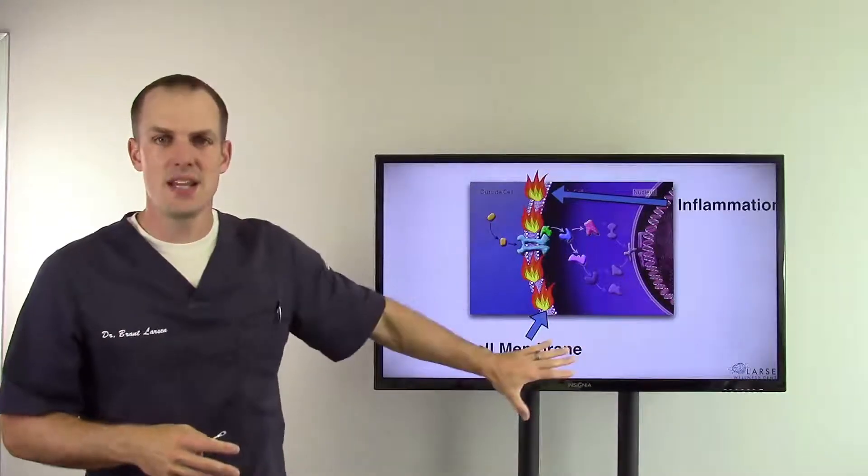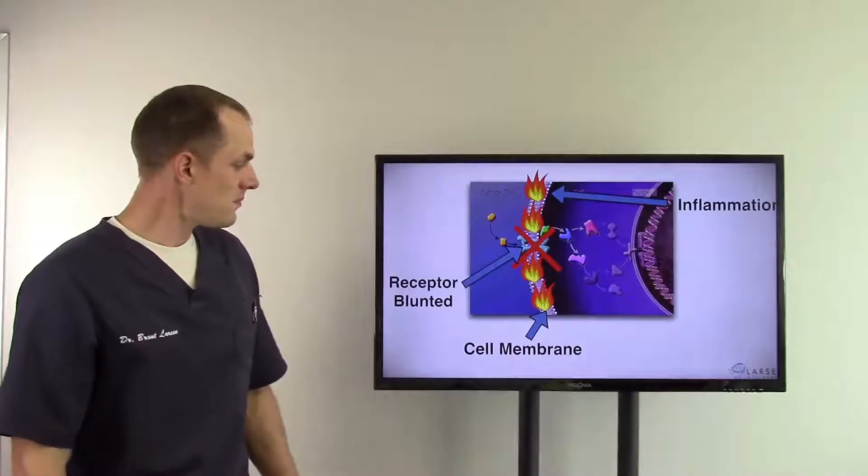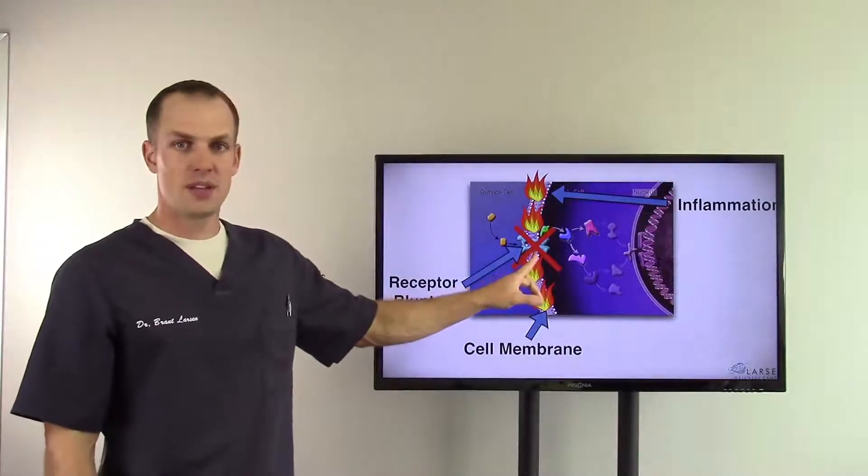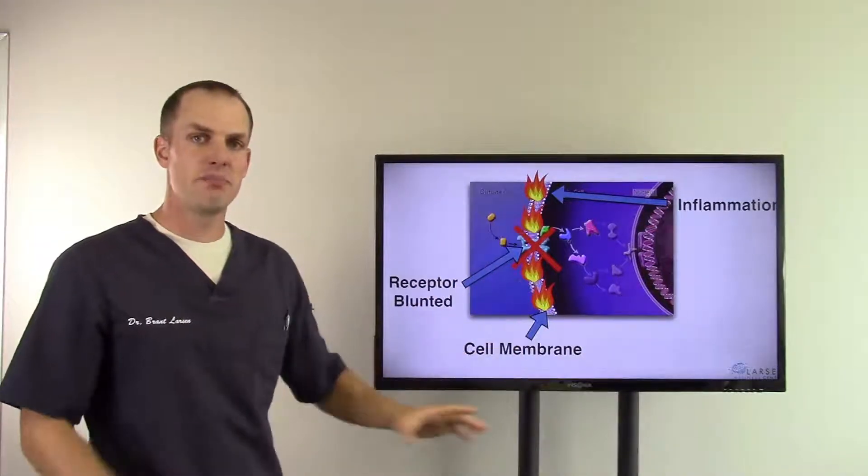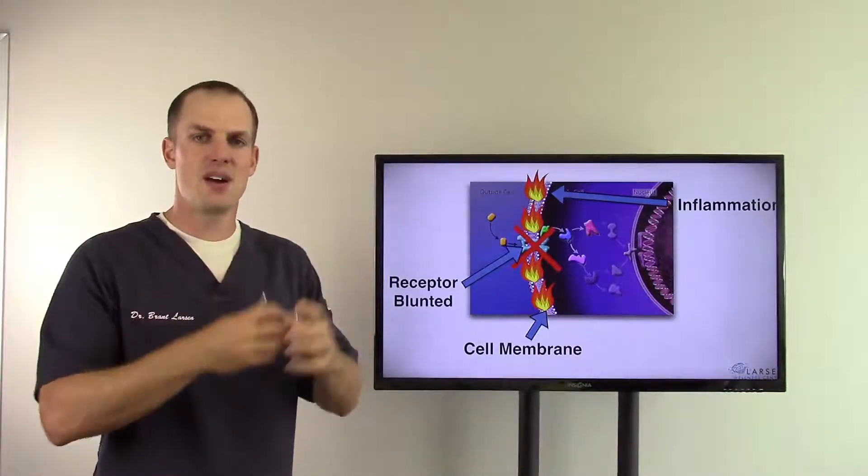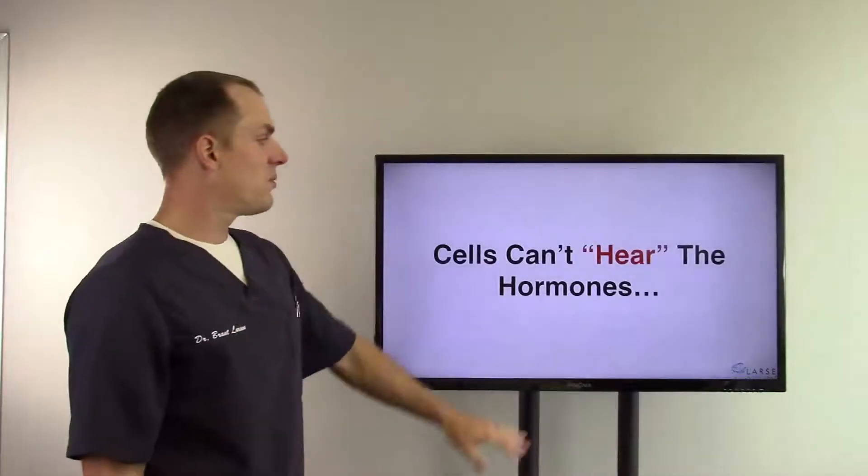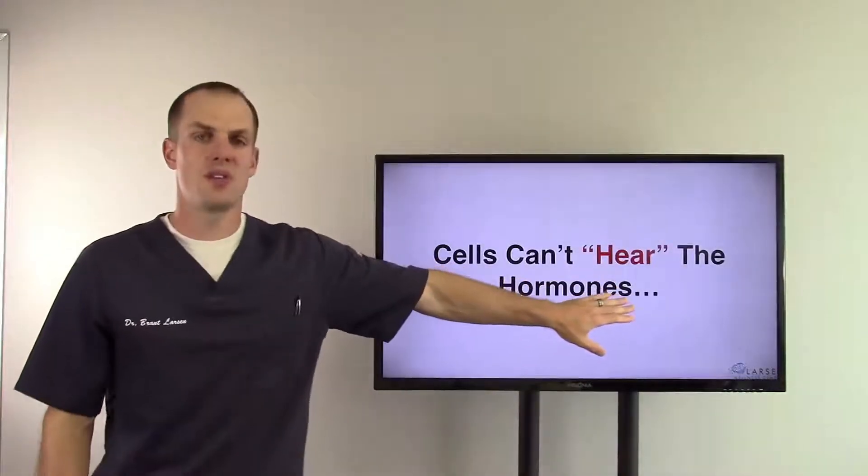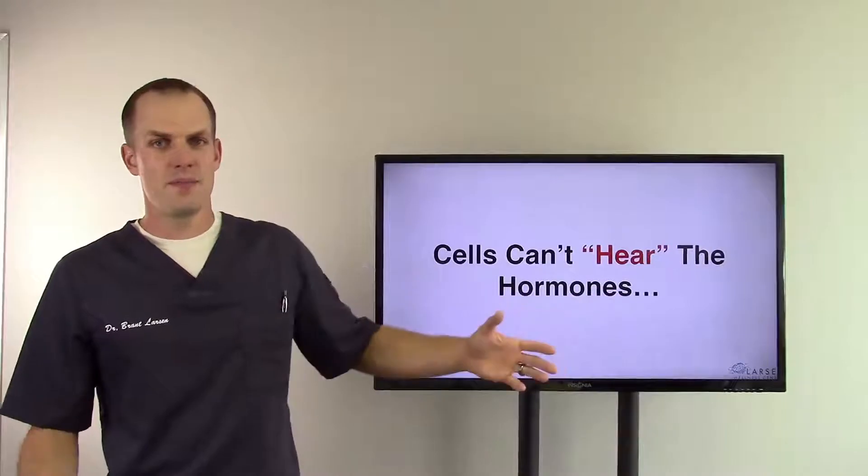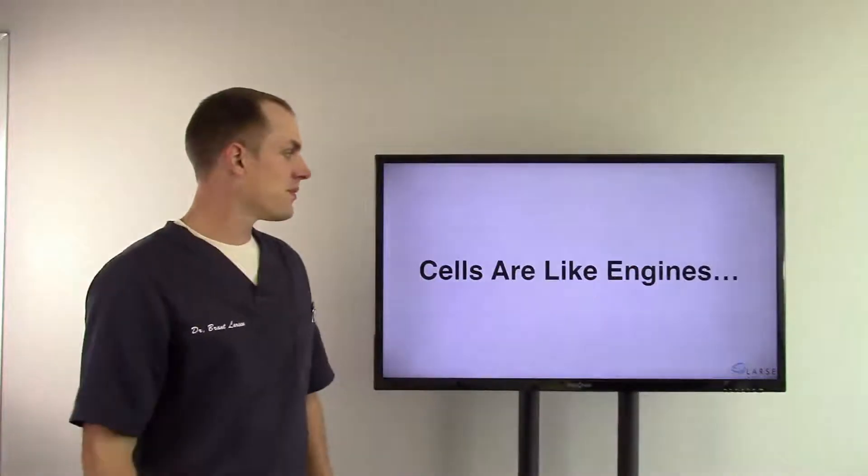These receptors get blunted, like it shows here. So inflammation blunts those receptors. It slows down and stops that process from happening in every single cell in your body. So basically your cells can't hear the hormones anymore. That's right - the hormone's there, it just can't hear it anymore.